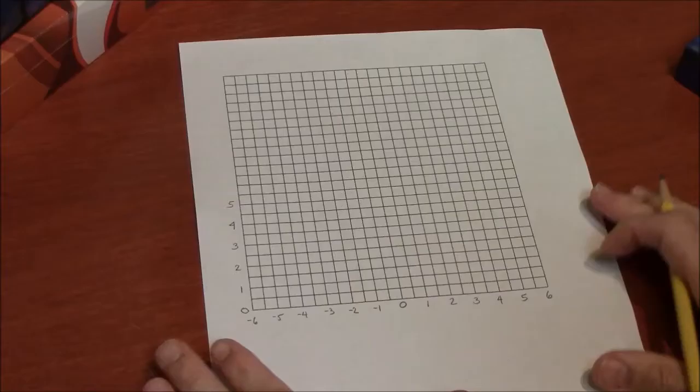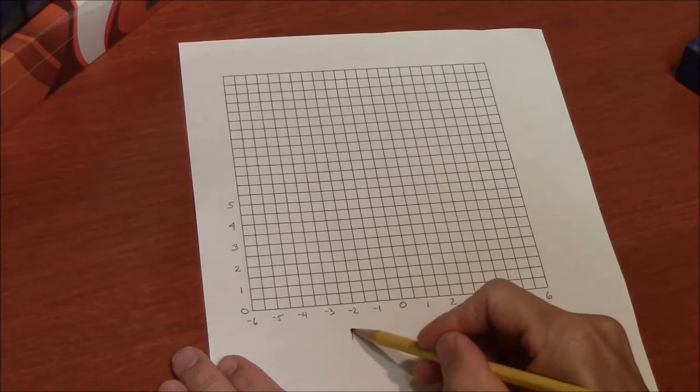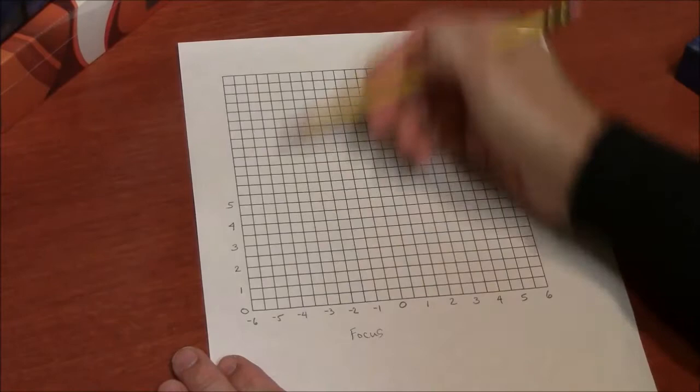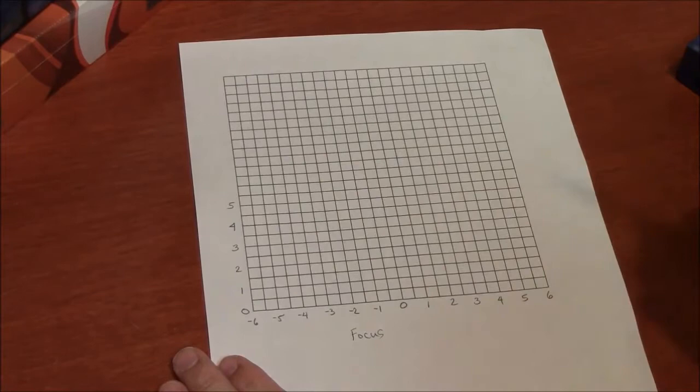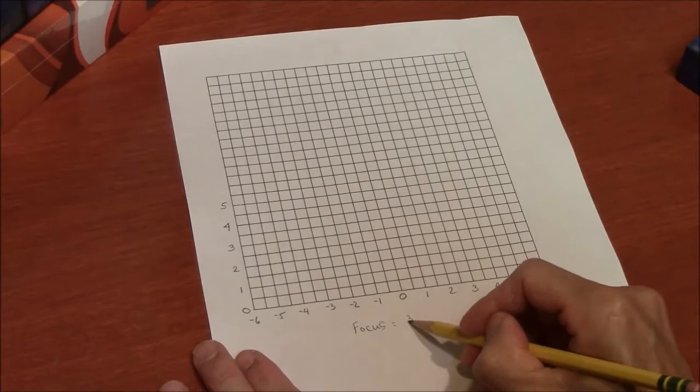One of the first decisions you'll need to make is what parabola do you want to draw. A parabola has a focus where all the light that comes in parallel to the axis will be focused onto one particular point. So your focus will have to be a certain number of inches. Let's imagine that I make this a three-inch focus.